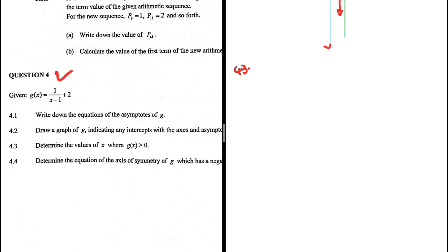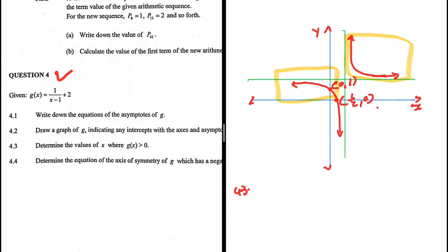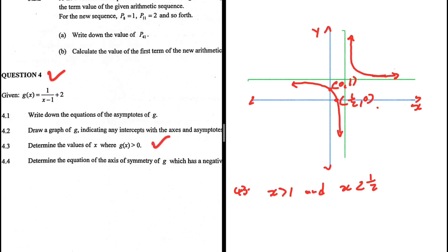4.3, determine the values of X for which G of X is greater than zero. So let's stick to our sketch here. We can see that in this part, G of X is greater than zero. We can clearly see that. And then another part where G of X is greater than zero is this part from X is equals to a half this part up to negative infinity. G of X is greater than zero. So what are we seeing? We're seeing that when X is greater than one, G of X is greater than zero because X cannot be close to one. That's our asymptote. And X is less than a half, G of X is greater than zero. So that is our solution.